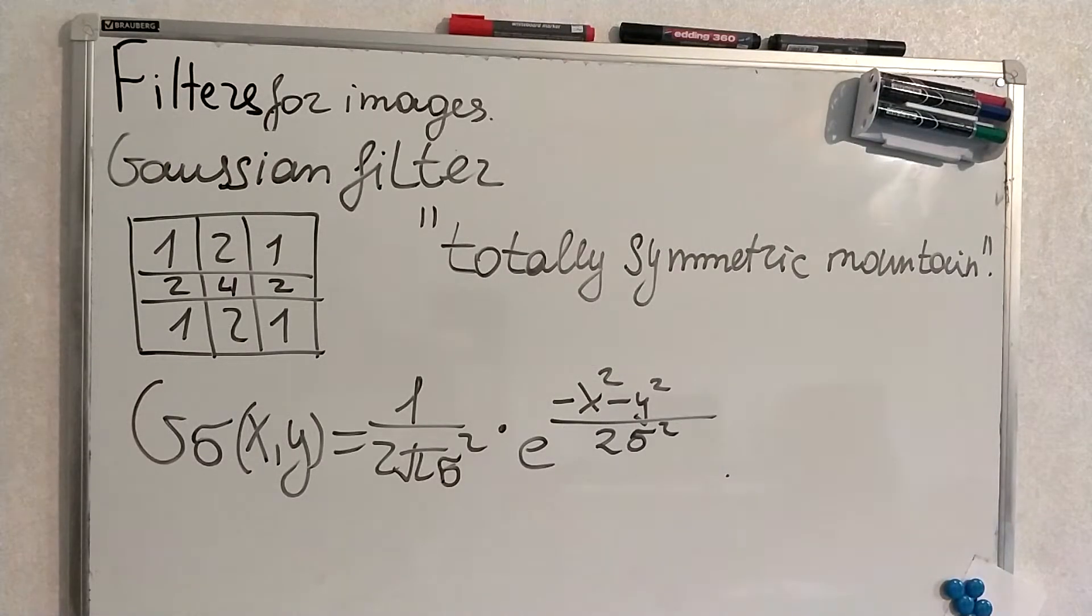Another very important example of filters is Gaussian filter. It looks like a totally symmetric mountain. It works as a low-pass filter. And the point is, because exponent takes x and y, makes second power of them, sums them,